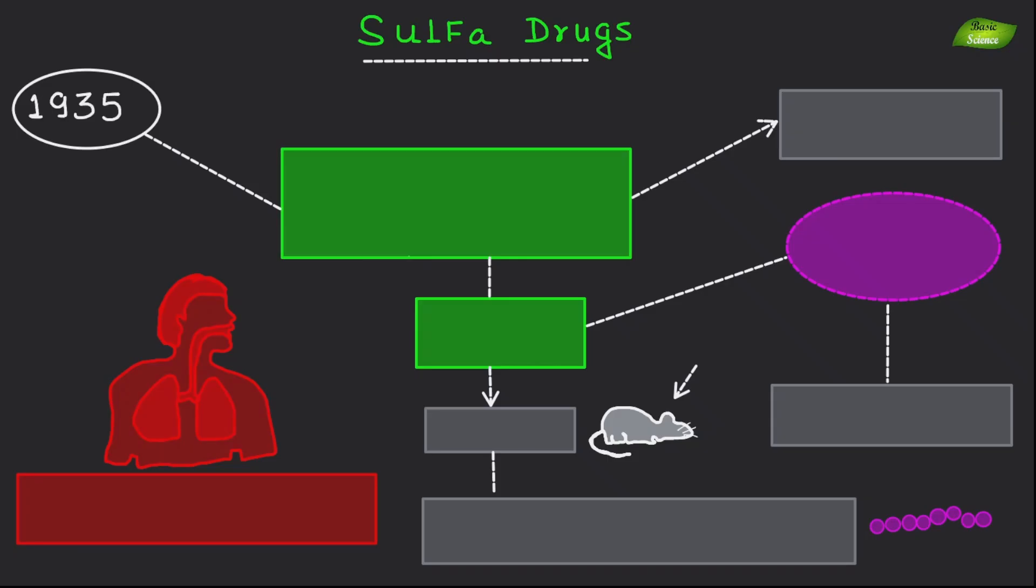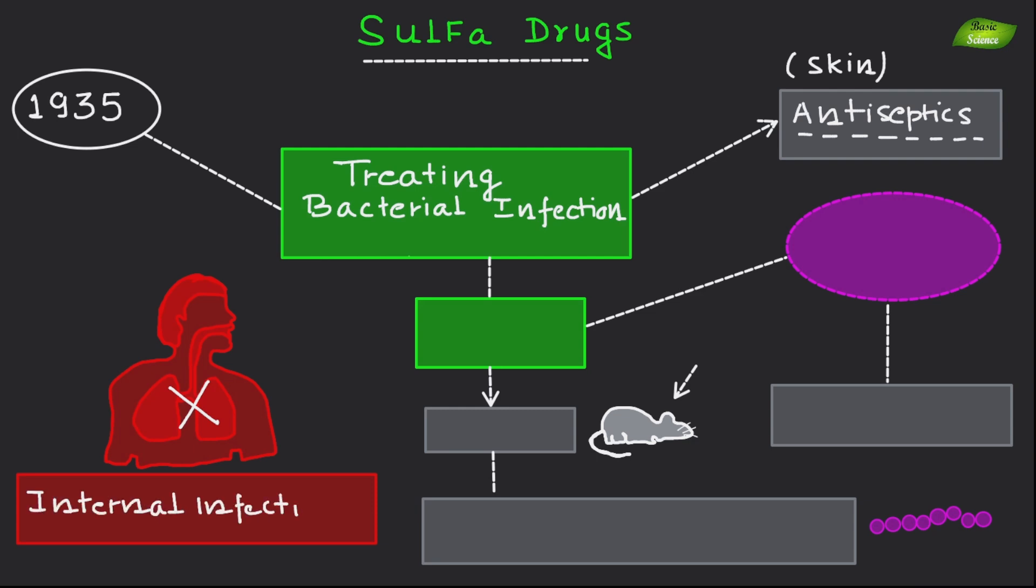In 1935, a major advance in treating bacterial infections occurred. Before this, antiseptics were only used on the skin and could not treat internal infections. The dye protocyl was found to protect mice and cure patients with streptococcal infections. Protocyl breaks down in the body to release sulfanilamide, which is the first effective sulfur drug.